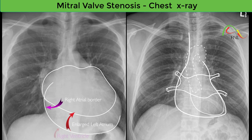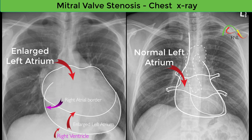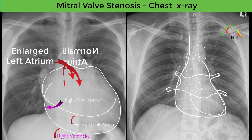Classic radiographic features of mitral stenosis include left atrial enlargement, enlarged left atrial appendage, splaying of the carina, cardiomegaly, and pulmonary vascular cephalization. Let's discuss these features one by one.